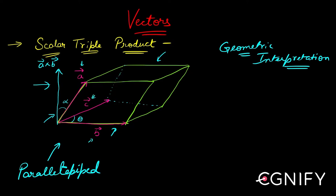Let's see what the scalar triple product of these three vectors can give us. I have constructed a figure called a parallelepiped using these three vectors as the edges. As you can see, b, c, and a are the edges of this parallelepiped.